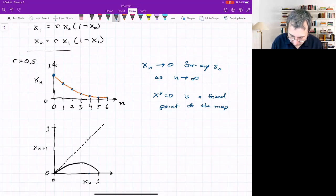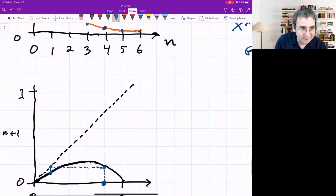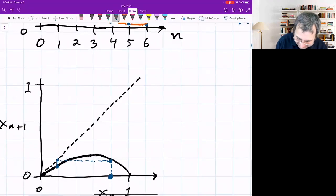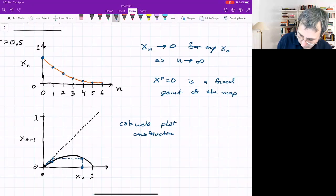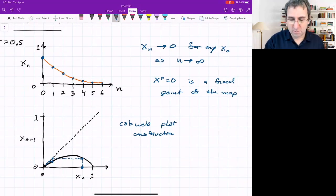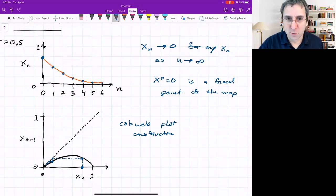According to the cobweb plot construction, if we started with some initial condition, we would go up to the curve. That tells us where to go. We go horizontally to this 45 degree line, and then down to this point. You can see the cobweb plot is just taking us into the origin. This happens no matter where we start.